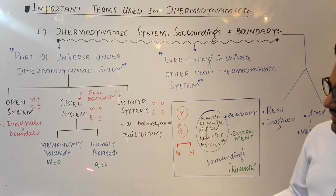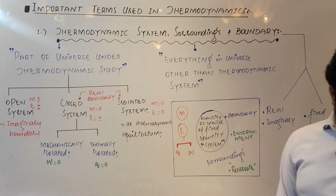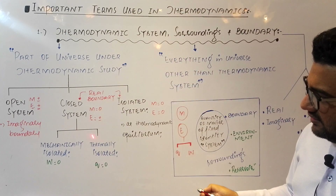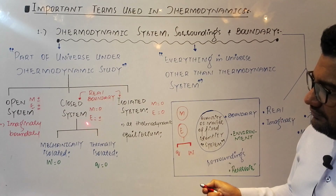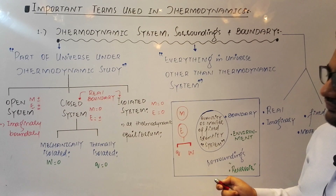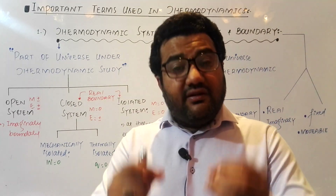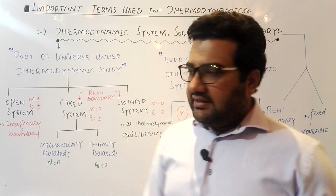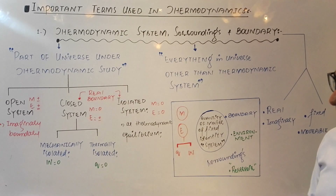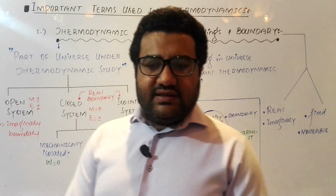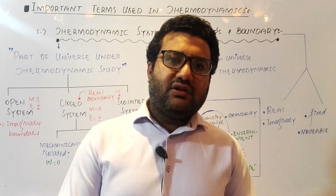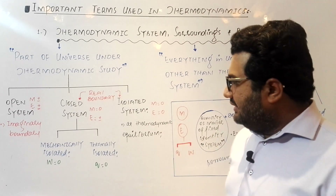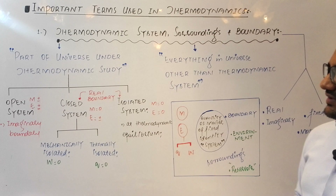The second subcategory is the thermally isolated closed system, also called the adiabatic closed system. In this system, energy is exchanged between the system and surroundings in the form of work, but heat exchange is not possible. When heat exchange is not possible, the closed system remains at constant temperature. These are the two subclasses of the closed system.